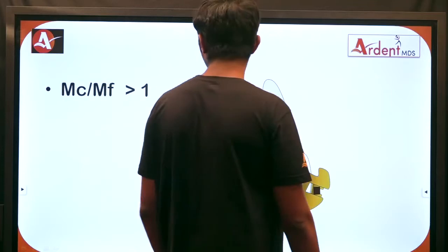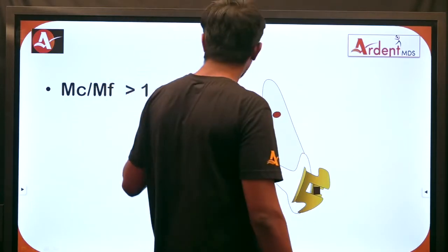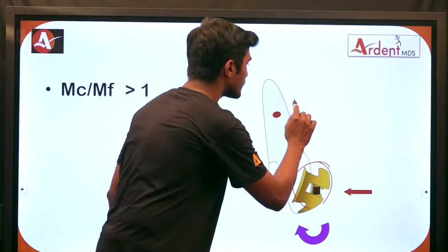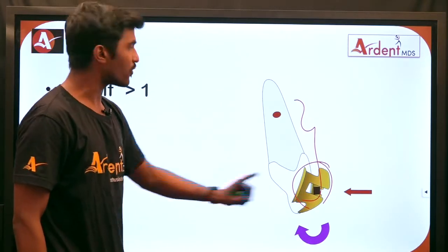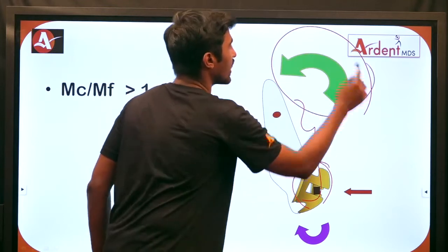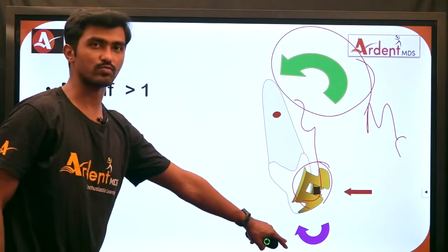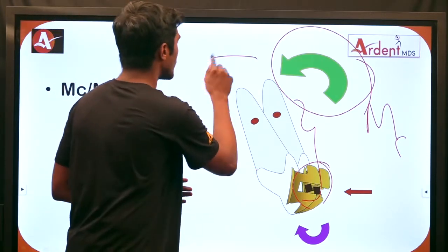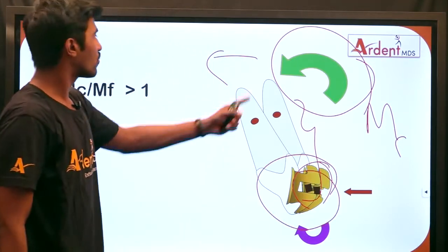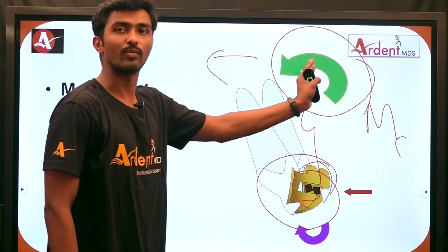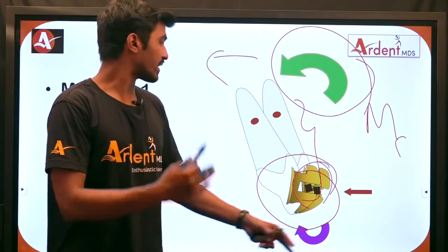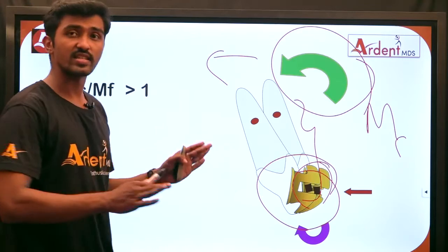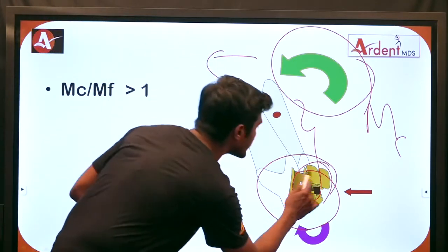In the last scenario, the moment to force ratio is greater than 1. When I apply a bigger counter moment than the moment of the force, I get a tooth movement called root movement or torquing. The crown remains in the same position while only the root moves in the direction of the counter moment. In such cases, the center of rotation is located at the bracket level.